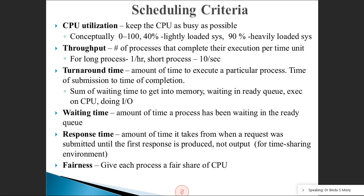The next criterion is turnaround time. If you submit a process at 10 o'clock and get the result at 11 o'clock, the time duration between submission and completion is the turnaround time. Turnaround time consists of the waiting time to get into memory, time waiting in the ready queue, time executing on the CPU, and time doing I/O operations — all these collectively make up the turnaround time.